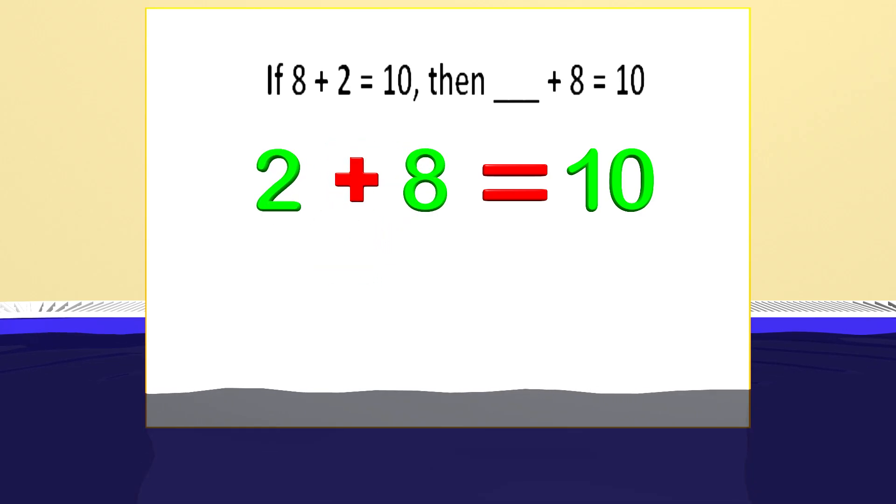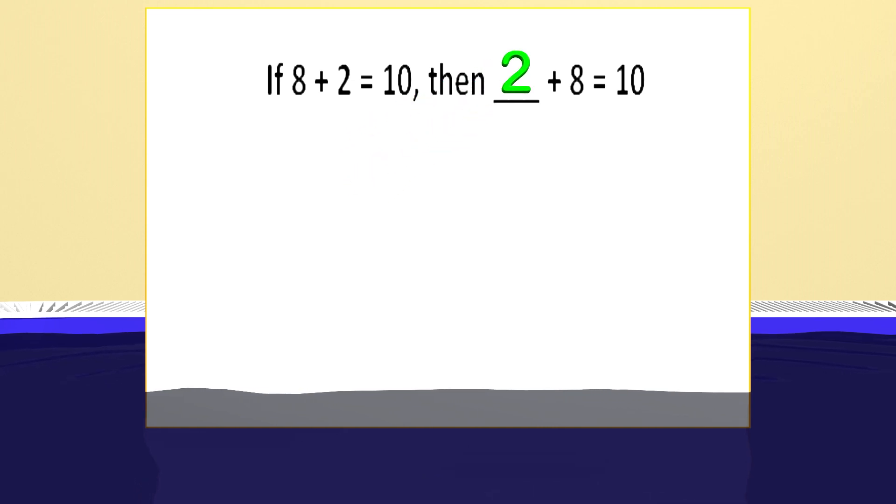So to fill in the missing number, what do you think it will be? The missing number is 2. The numbers 8 and 2 were just switched. With the 2 in the blank, we get 2 plus 8 equals 10, and that is true. Great job, kids!